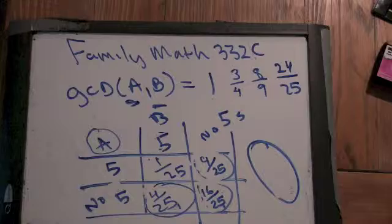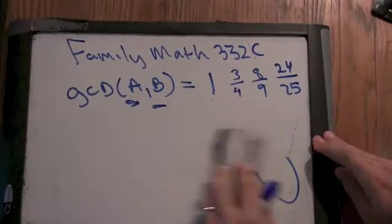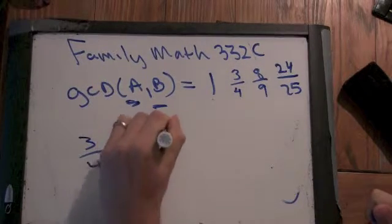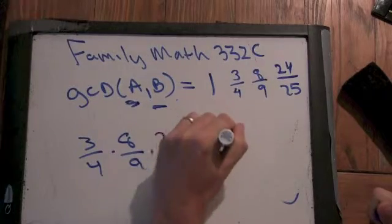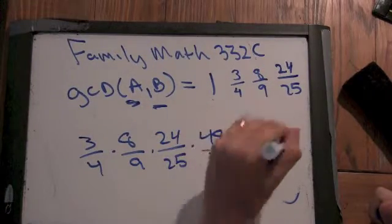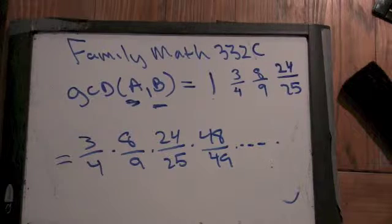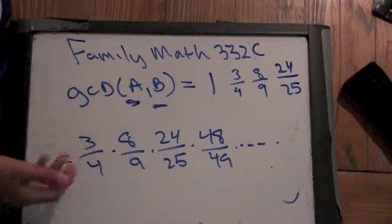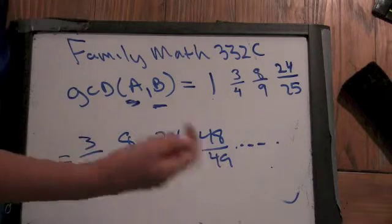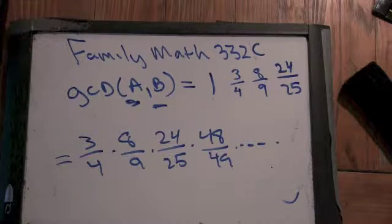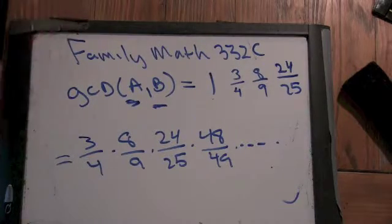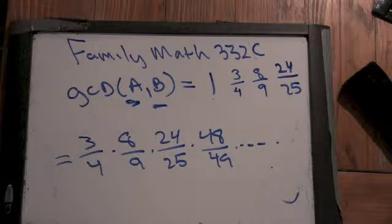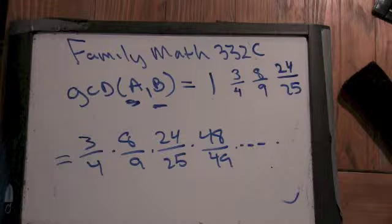Let's take a look at what happens when I start multiplying these things together. So I'm going to have three-fourths times eight-ninths times twenty-four twenty-fifths times forty-eight forty-ninths times dot dot dot. What can we say about this product? Well, the denominator is going to be bigger than the numerator. In every fraction the denominator is bigger. So the denominator is going to be larger when you multiply them all out. So why is that at least useful to know? Because it's less than one. So we can see right away this product is going to be less than one.